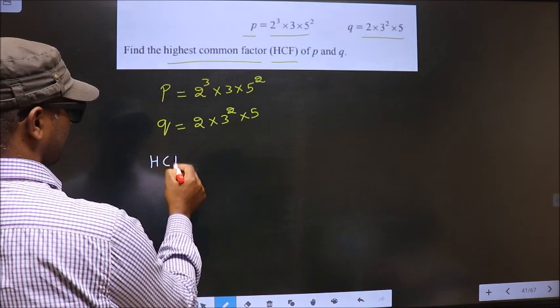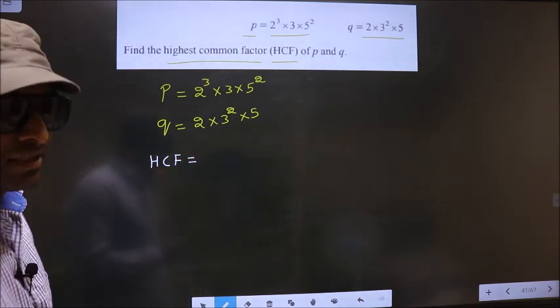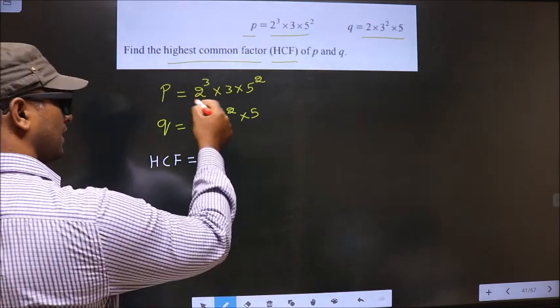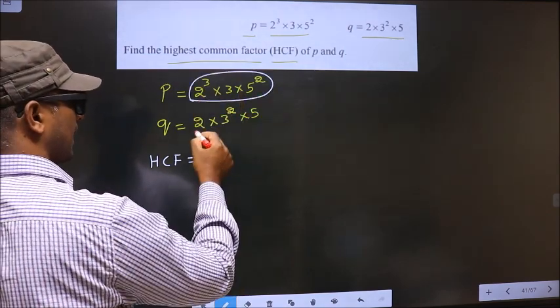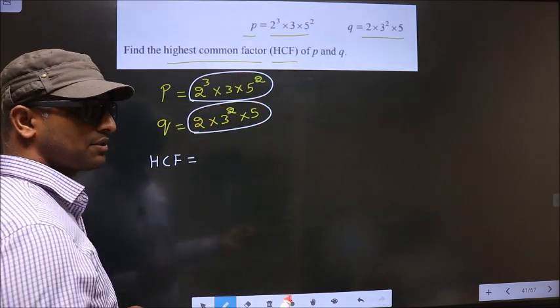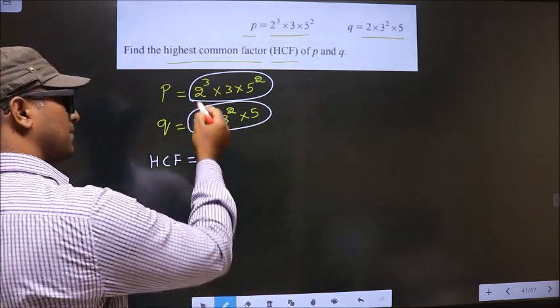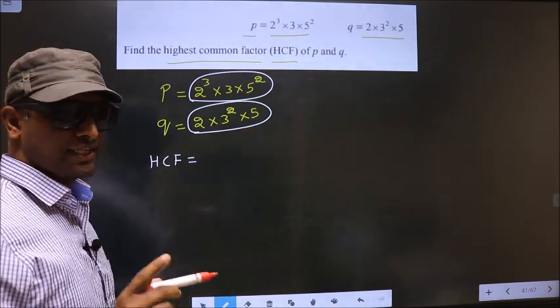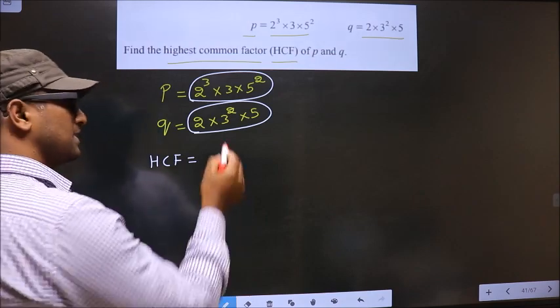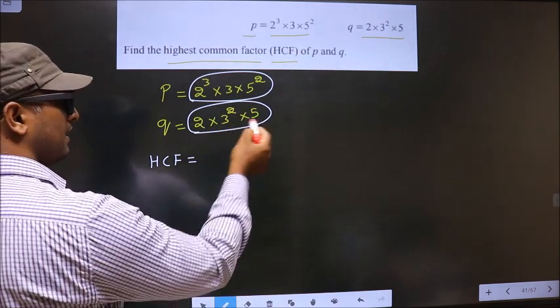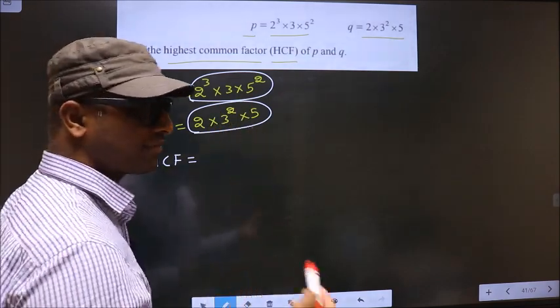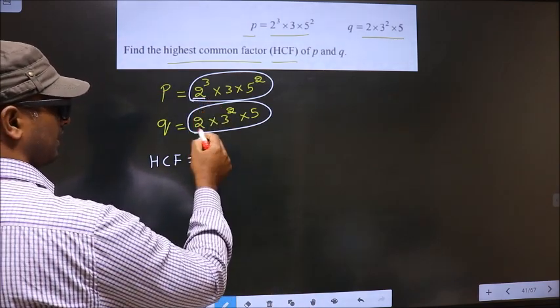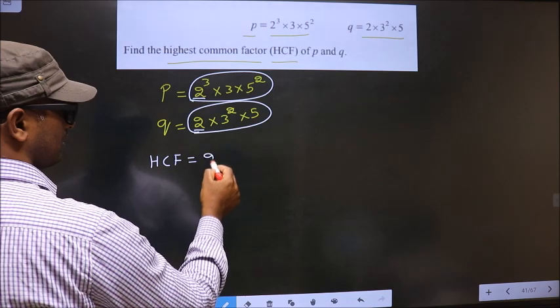So HCF will be the product of numbers that are present here and also here. So now we should find the numbers that are present here and here. I repeat, we should find the numbers that are present here and here. So let us find. Starting with the number 2. Do we have 2 here? Yes. So here also you write 2.